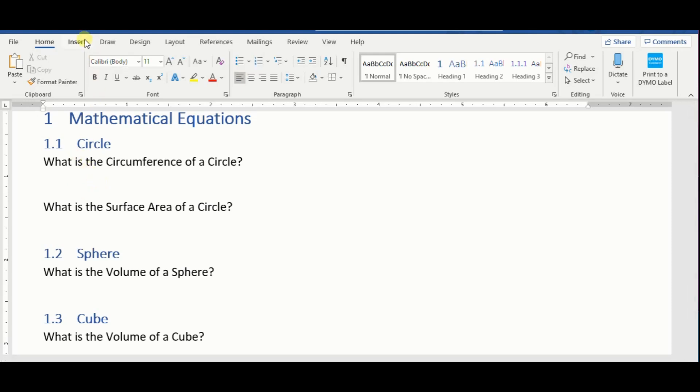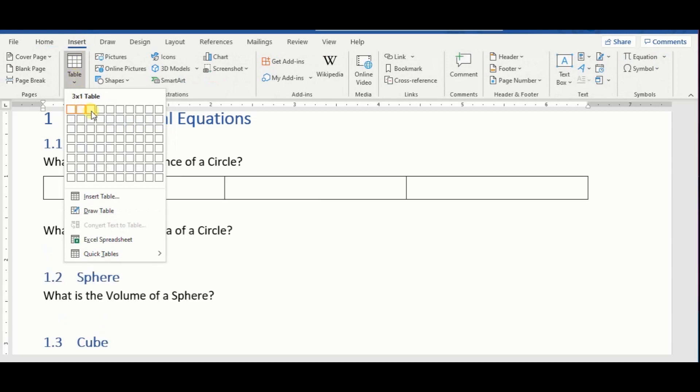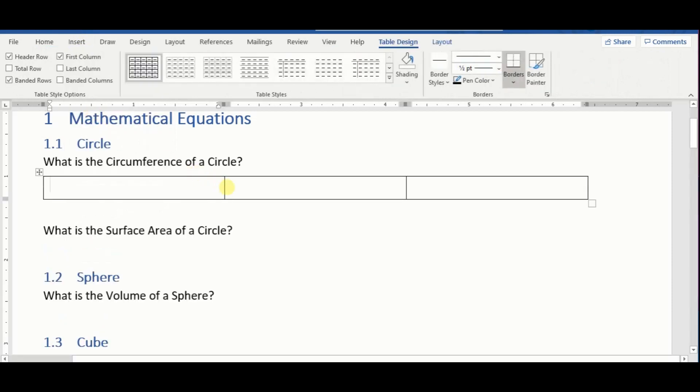The first thing is to click on insert, then table, and we will create a table of three cells, and we want the first cell and the third cell to have approximately the same size. Now the second cell is where the equation will be, and the third cell is where the equation number will be.